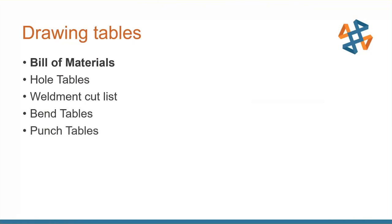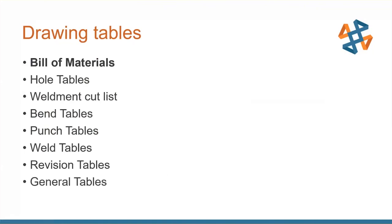For sheet metal users we have bend tables and punch tables — the punch table is one I know I forget about. For weldments we have weld tables. There are also revision tables and general tables, which are nothing more than cells you can specify. Design tables are a bit of an outlier — if you do configurations and use design tables, you can put those on your drawings as well.